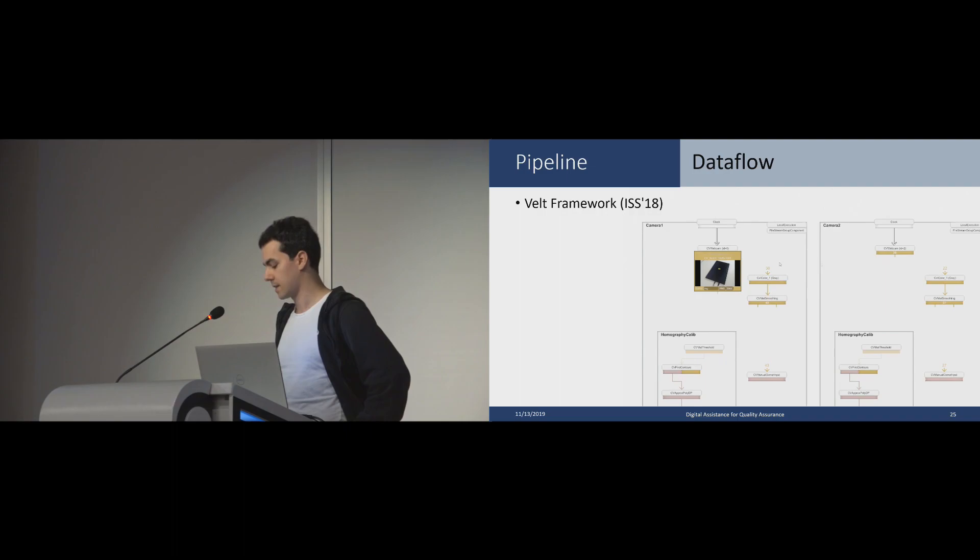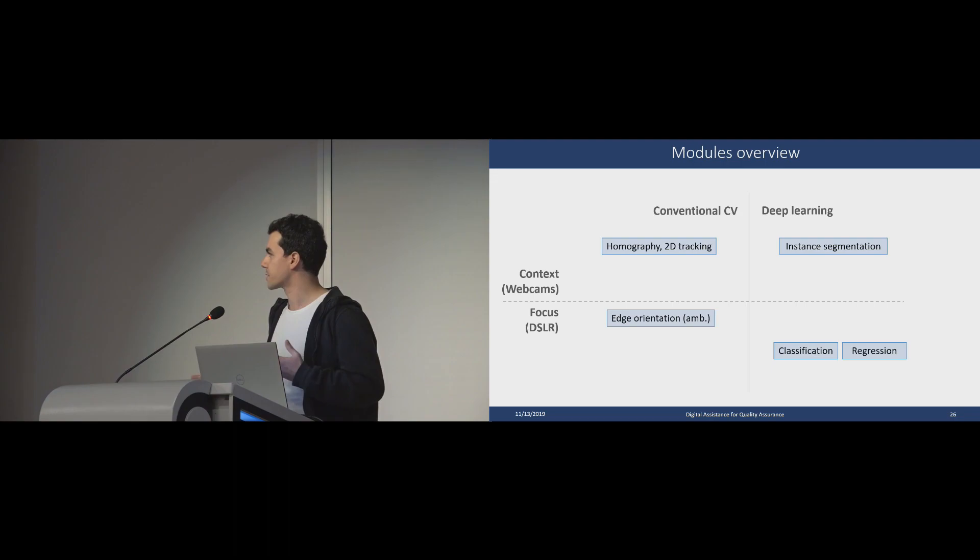Here are the software modules that we implemented. Based on that, we implemented various different variations of our pipeline. We started out with a very basic approach using homography and 2D tracking to track the brick, then classification using deep learning, which Joao is going to talk about later. Later on, we moved on to other more deep learning focused approaches where we do instance segmentation and use regression to get the orientation. Another variant, our main approach, is to first do instance segmentation, then get the orientation of the brick in an ambiguous way, then use classification to break up the near-symmetry of the brick.